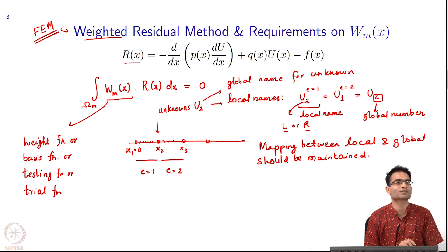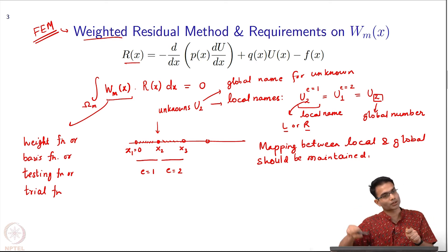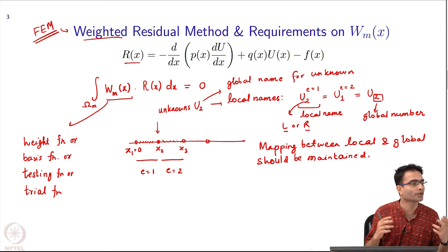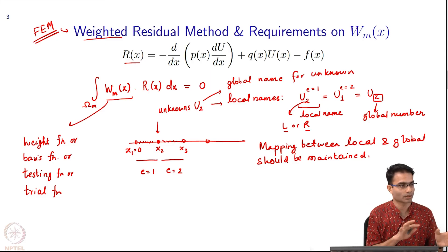This mapping between local and global should be maintained. Typically there is some data structure that you will use to maintain this mapping. What does this mapping tell you? If you give me the global number you should be able to go in and tell me what are the local numbers. Similarly, if you give me the local numbers there is a mapping that will go and tell you the global number. These are implementation issues - when you implement your code you should have this functionality.